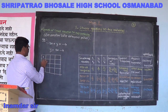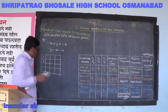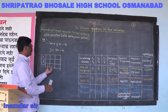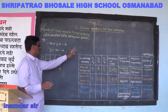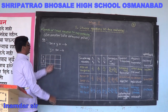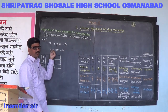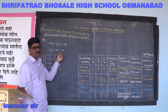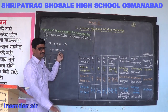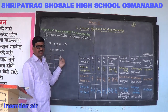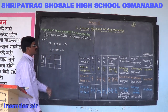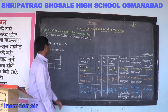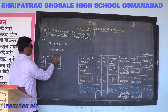In the table we write x, y, and the coordinate (x, y). We take x values 0, 1, 2. We have to put those values of x in the equation y is equal to 3x minus 4 to get the values of y.